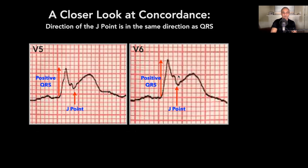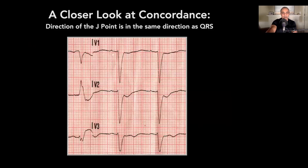Now look at V1, V2, and V3. In V2 and V3 especially, the QRS goes downwards and the J point follows the same path, also going downwards. That's another example of concordance.